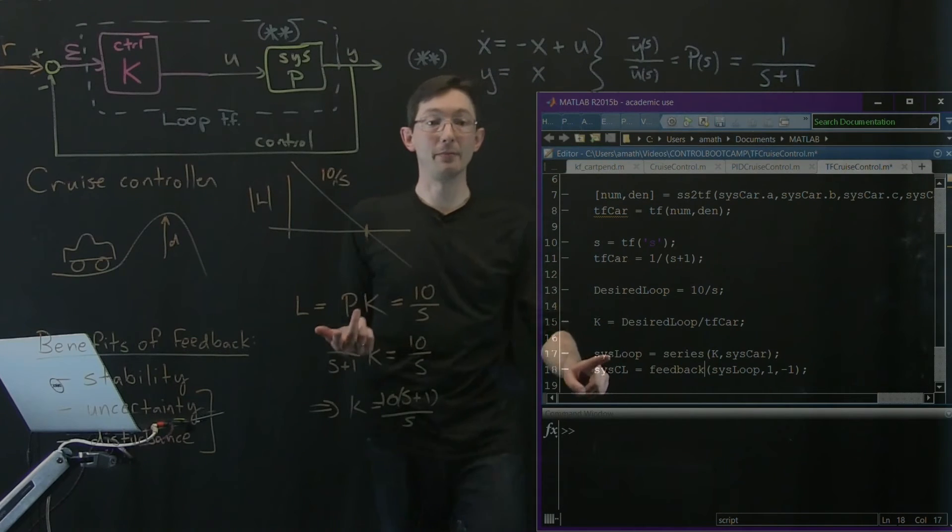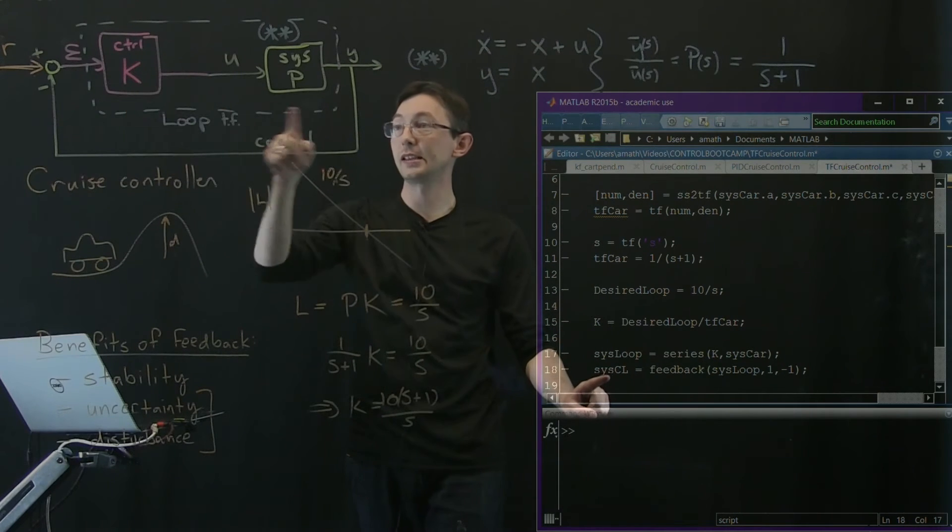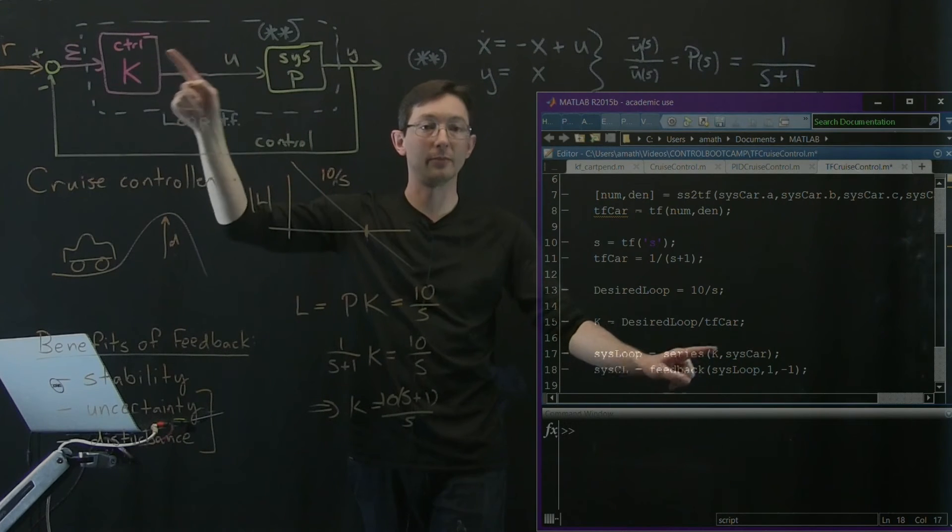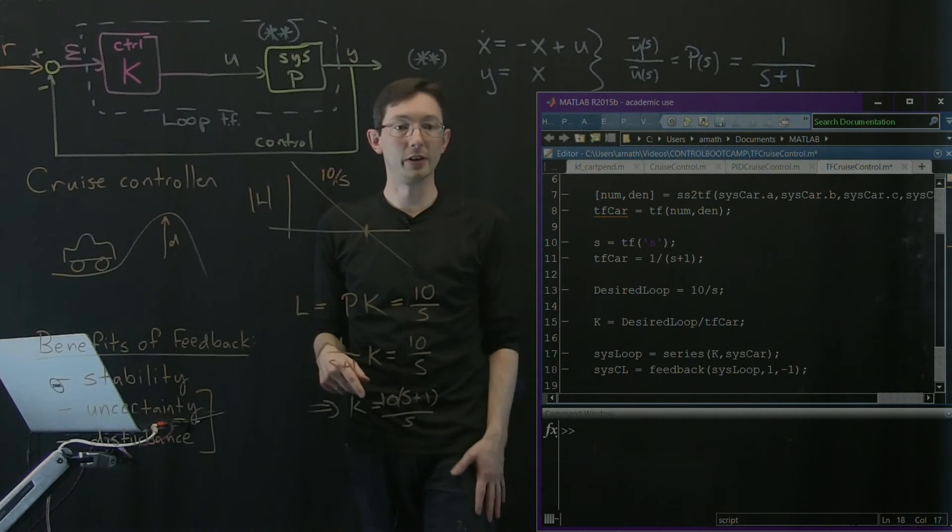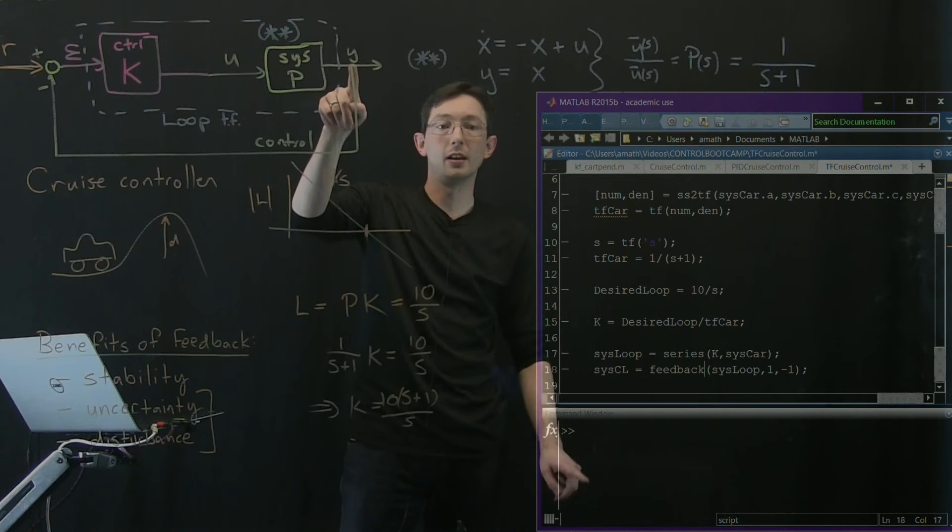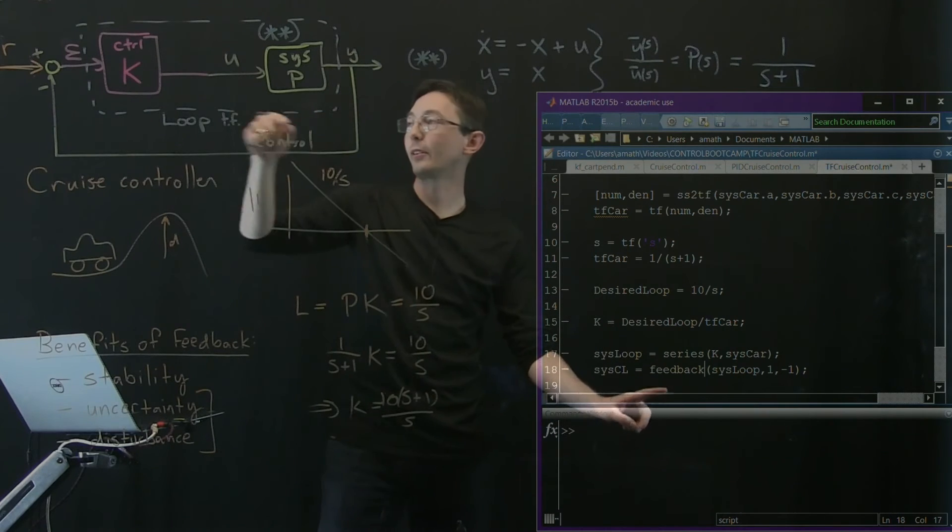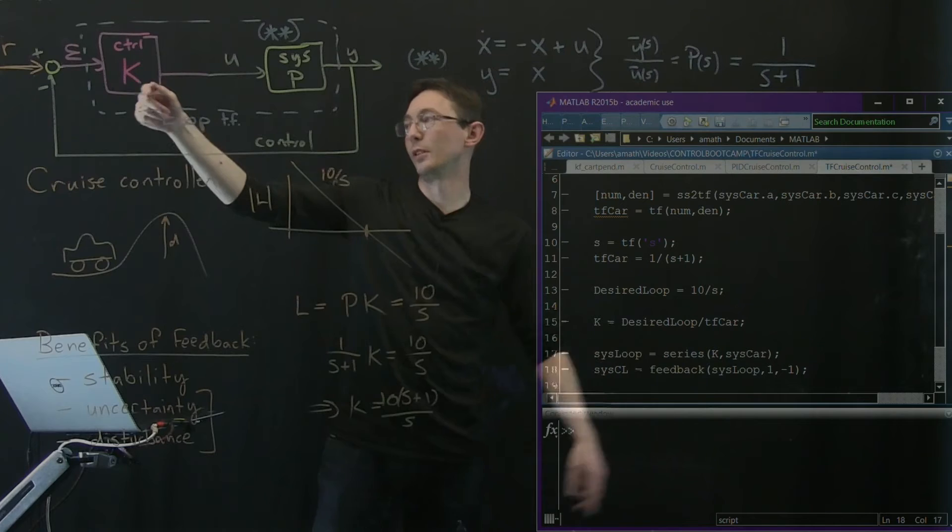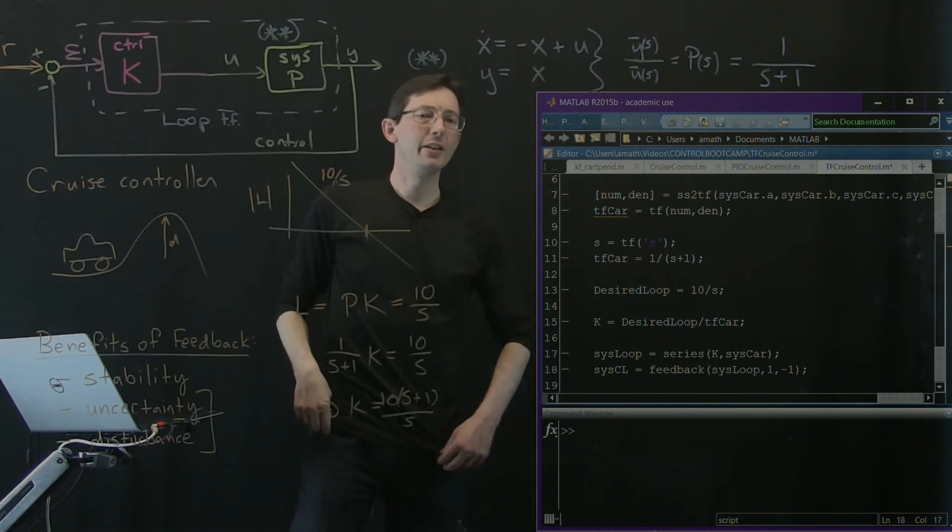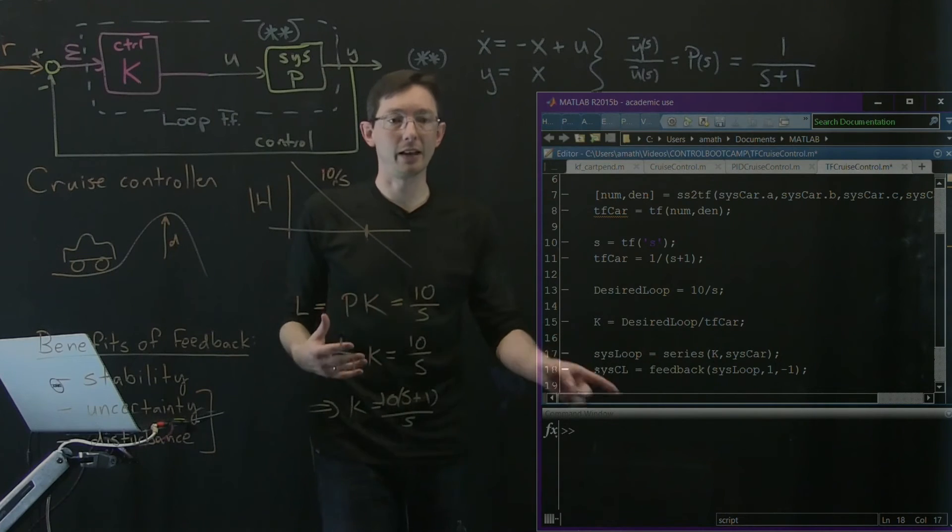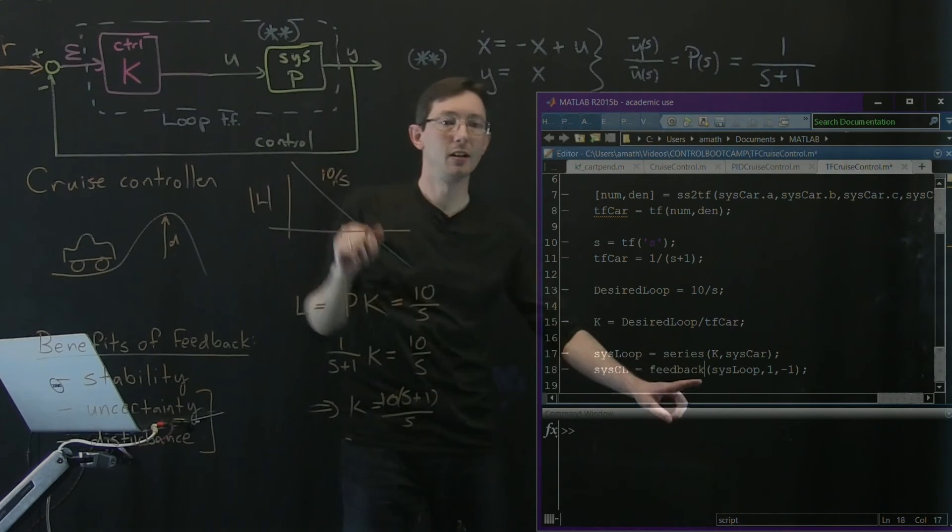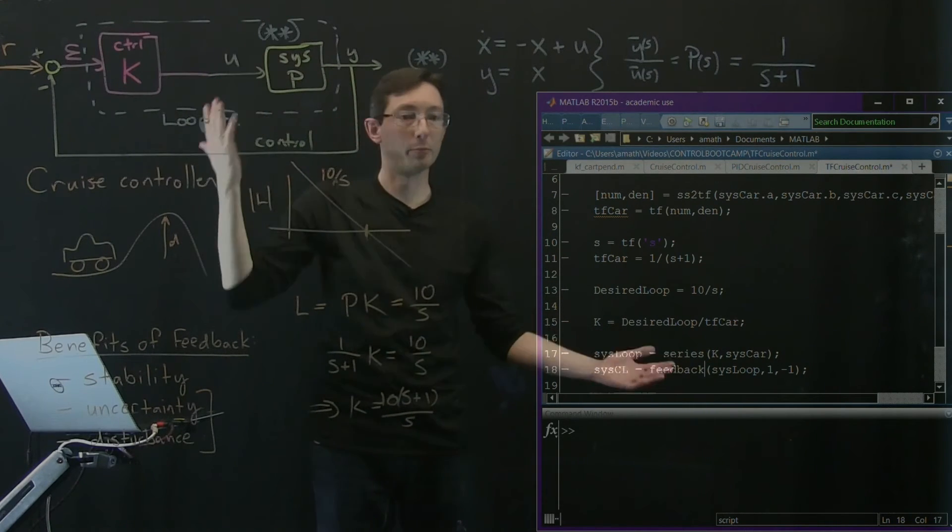Very simple to actually code this up in MATLAB. So I'm going to make something called sys loop, which is just the series of k followed by p, k followed by system car. So that's my loop transfer function. And then my closed loop system is just my loop transfer function run through the feedback command. So I have feedback 1, minus 1. That means it's plus 1, minus 1 around this loop. And you can look at the help commands to figure out exactly how to use feedback and series for your problems. Series is pretty simple - it just chains these together and feedback just wraps feedback around that loop.